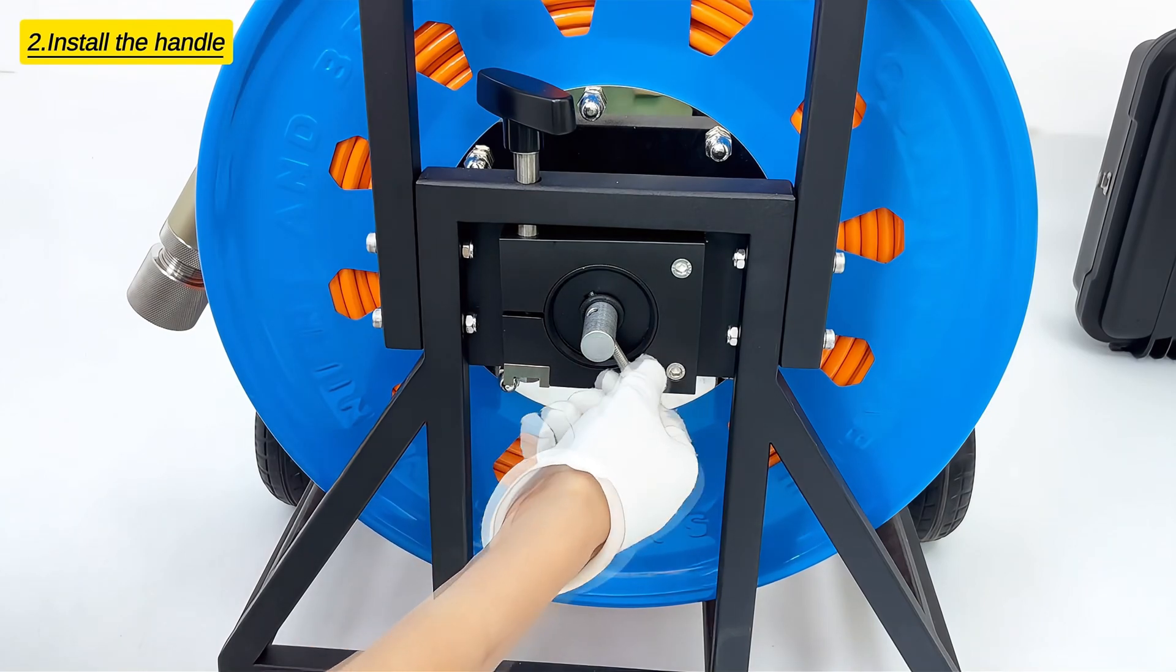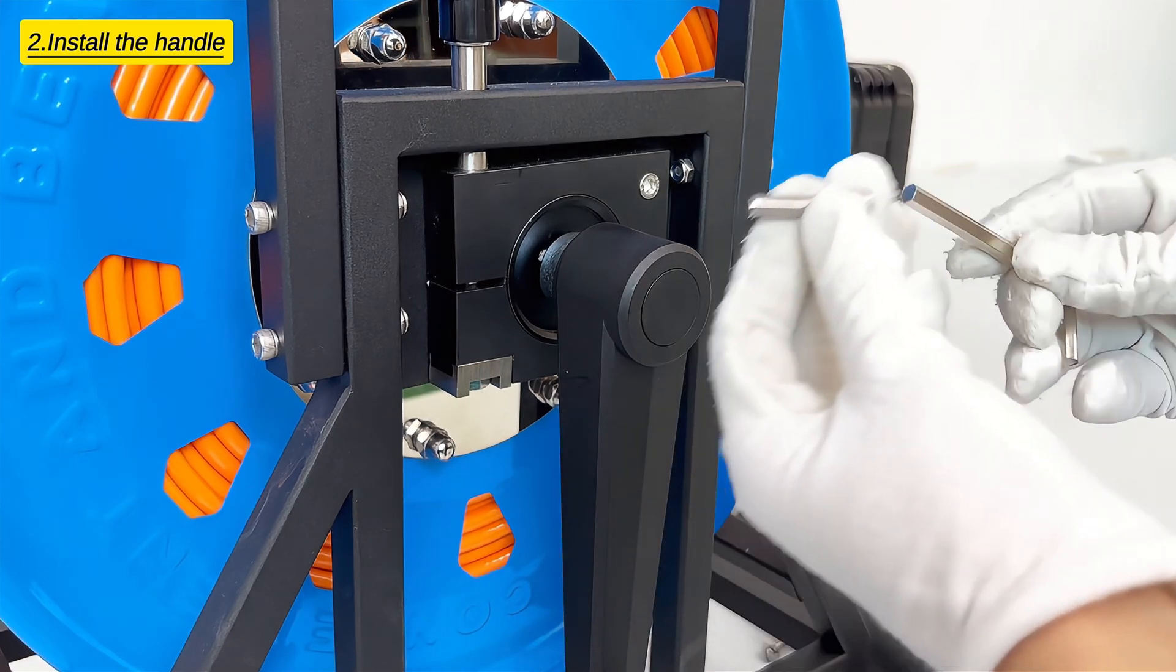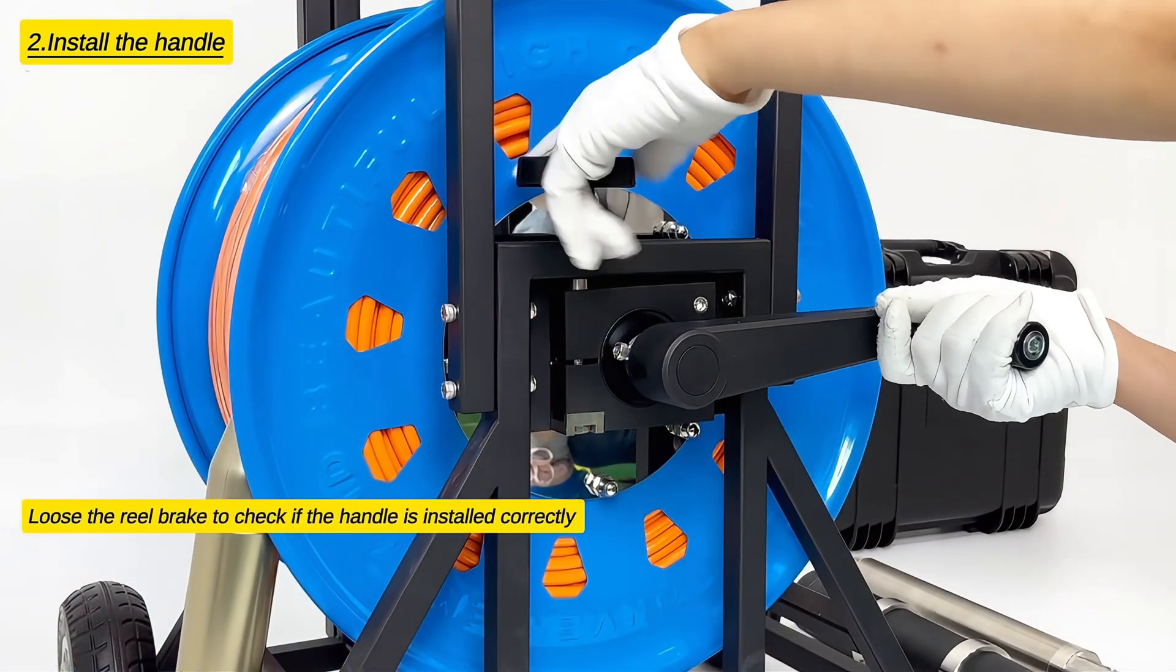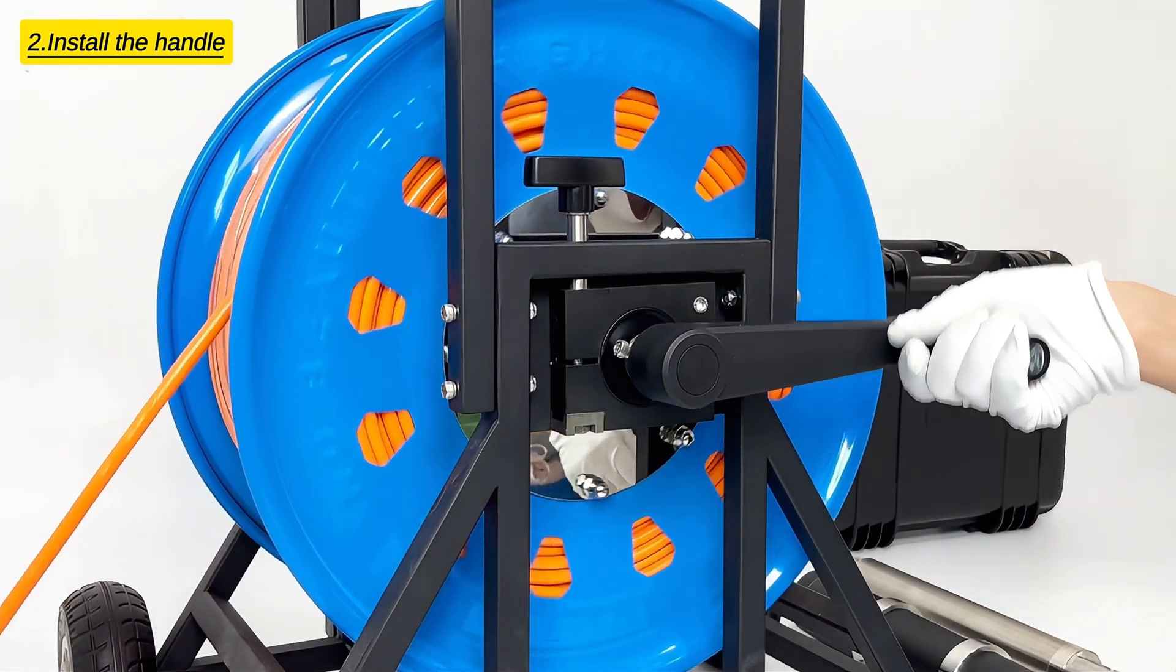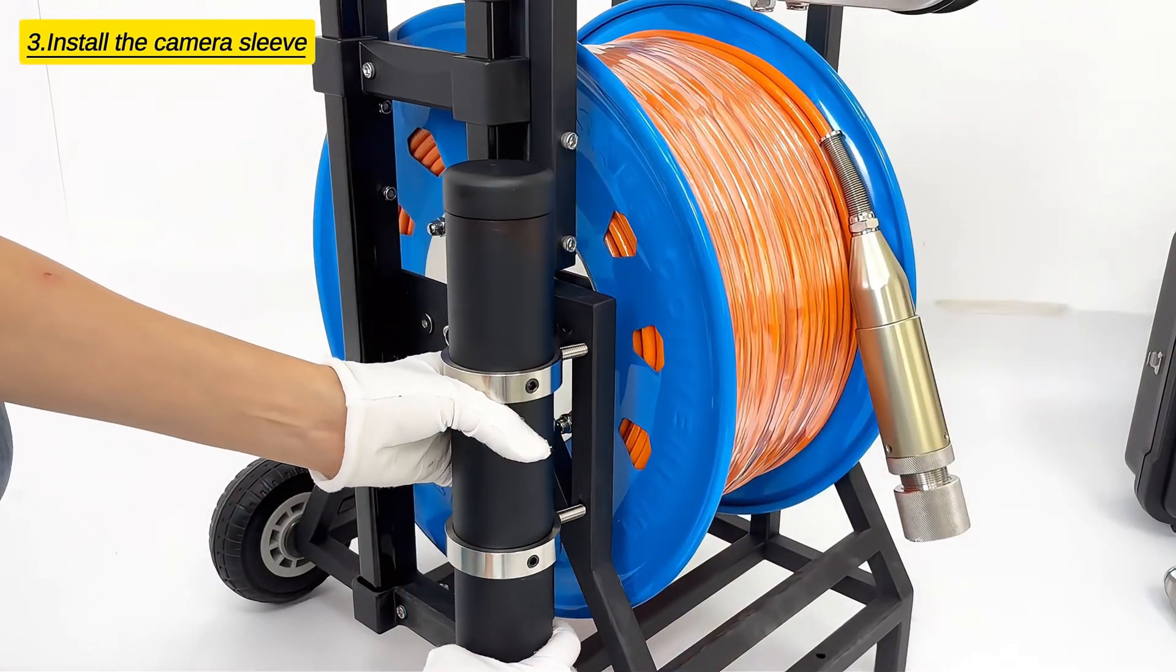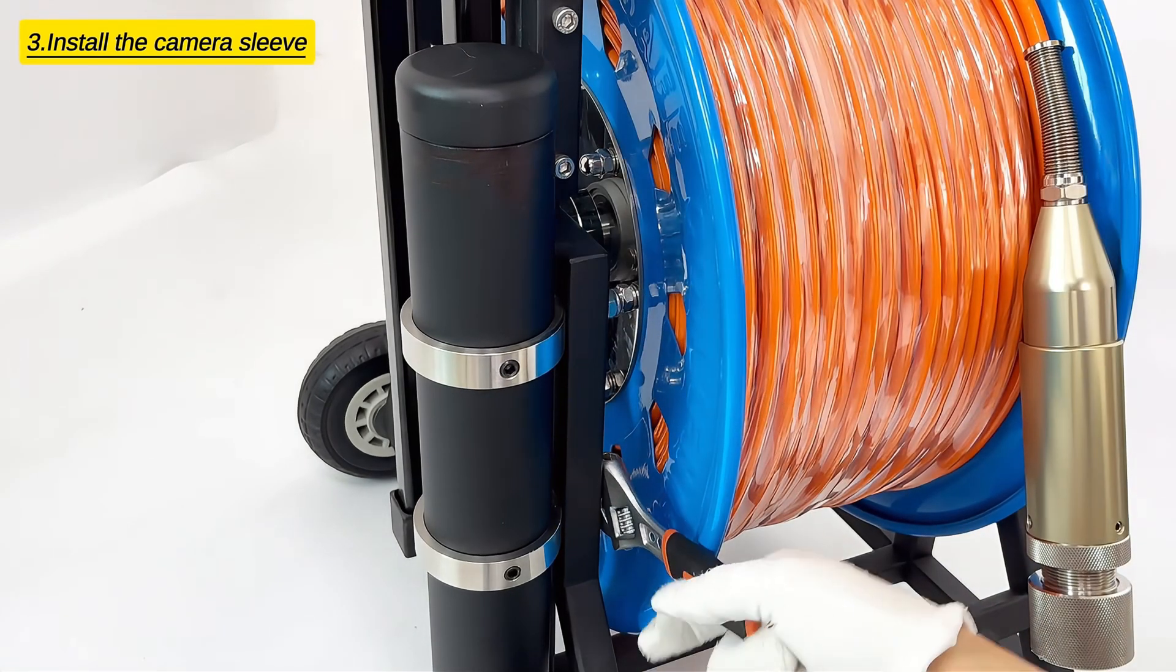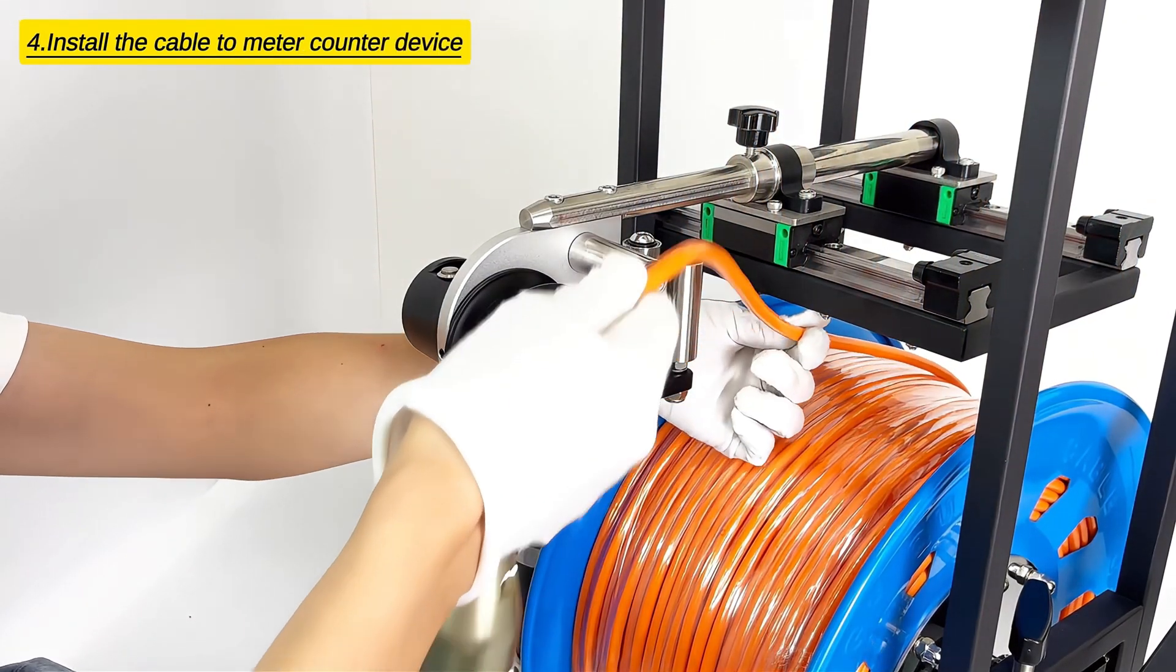Install the handle. Loosen the reel bracket to check if the handle is installed correctly. Install the camera sleeve. Install the cable to meter counter device.